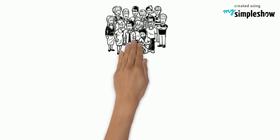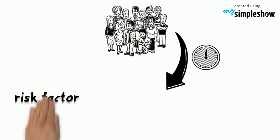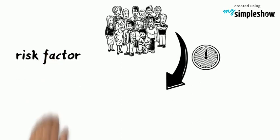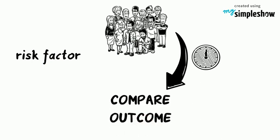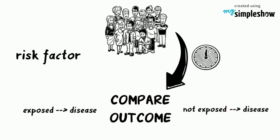Let's have a look at cohort studies. A group of people is followed over a period of time to see what happens to them, and information about risk factors is collected. We can then compare the occurrence of an outcome like disease in those who are exposed to a particular risk factor to those who are not exposed to that risk factor.